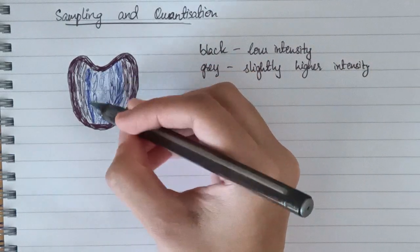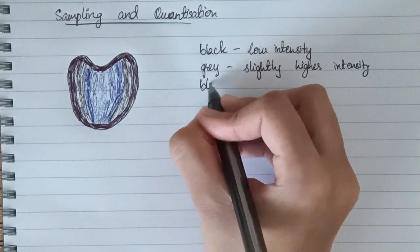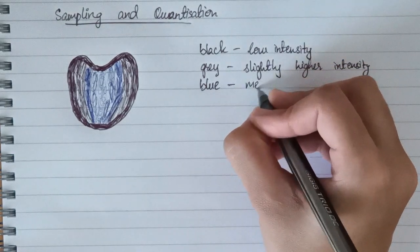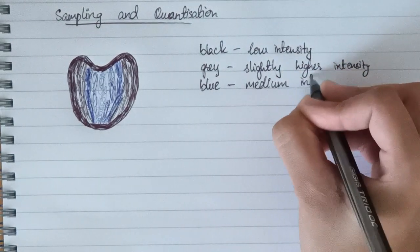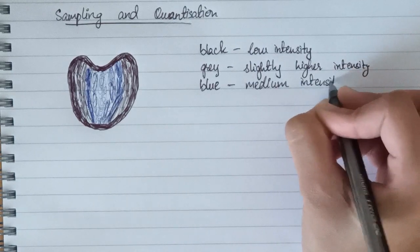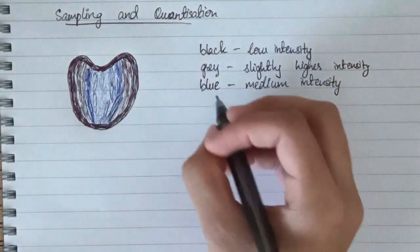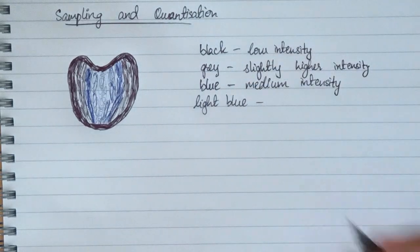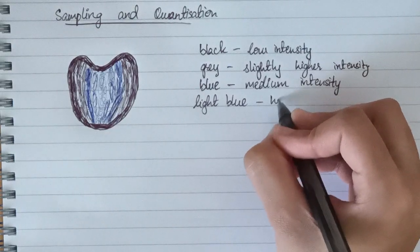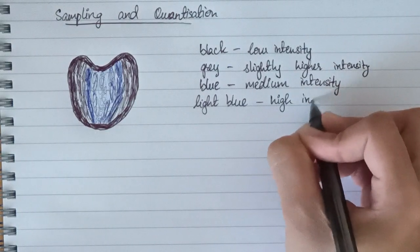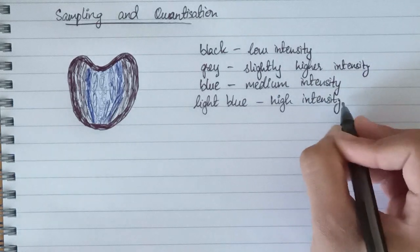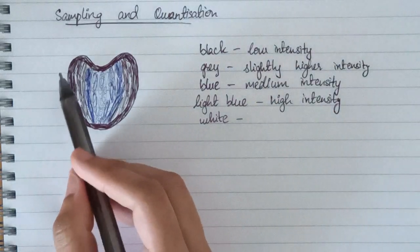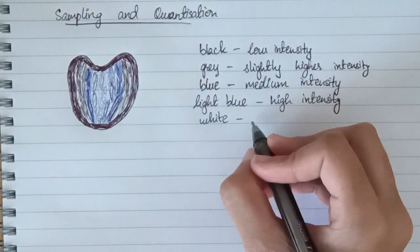The blue color represents medium intensity, the light blue represents high intensity, and the white color surrounding this image represents very high intensity. So in this way I have drawn an image with different intensity values.